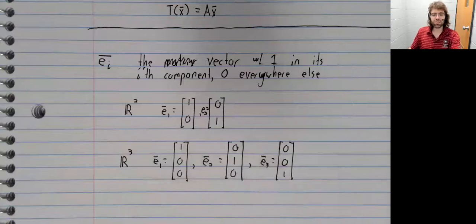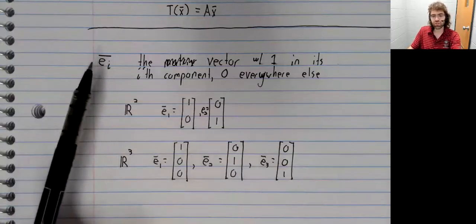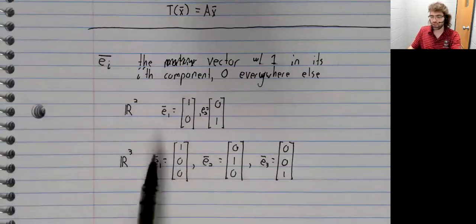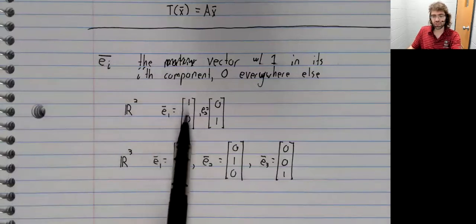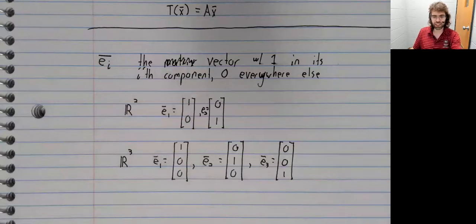Notice that this notation is contextual. So e sub one means one thing in R two, it means a different thing in R three. It would mean something else in R four.